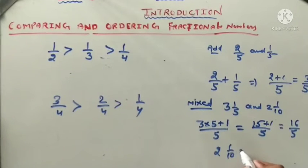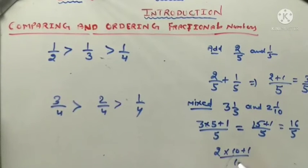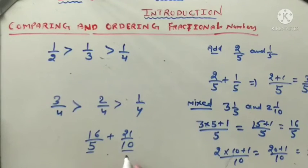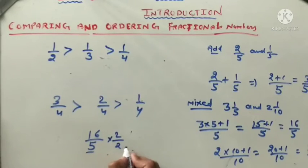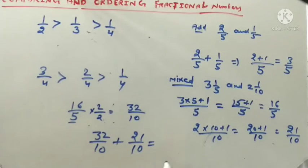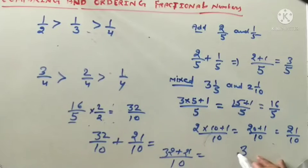Now add 16 upon five plus 21 upon ten. Since the denominators are different, multiply 16 upon five by 2 to get 32 upon ten. Then 32 upon ten plus 21 upon ten — denominators are same, so add numerators: 32 plus 21 equals 53 upon ten.